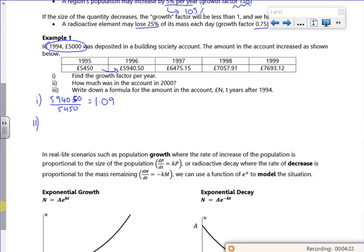How much was in the account in 2000? So if I just do the 7693.12 times by 1.09, that will give me roughly 8385.50. So I'm using the completed pass there, might be slightly ninety.